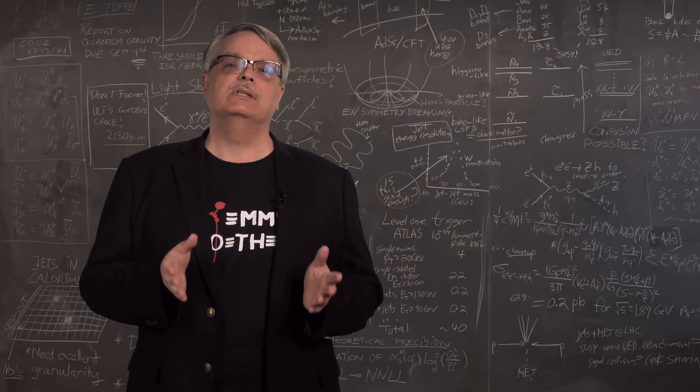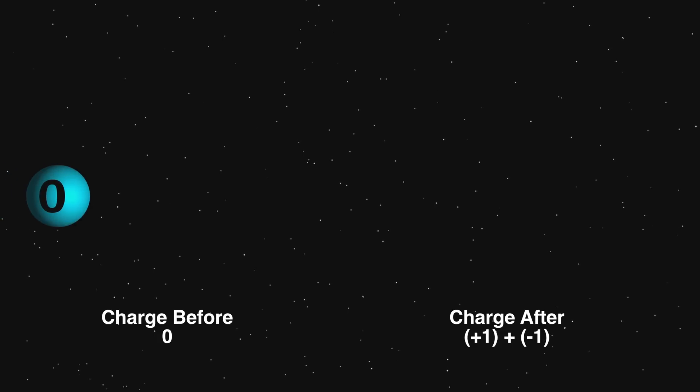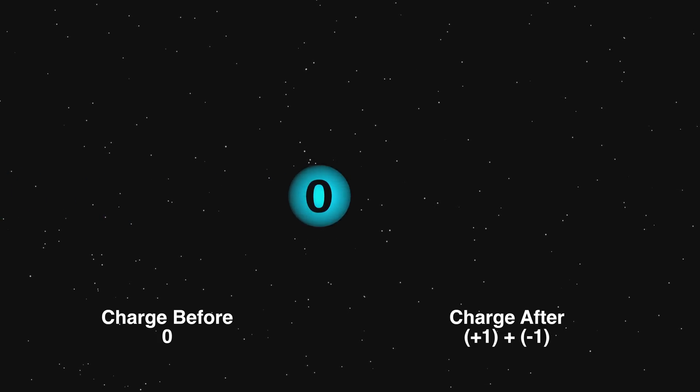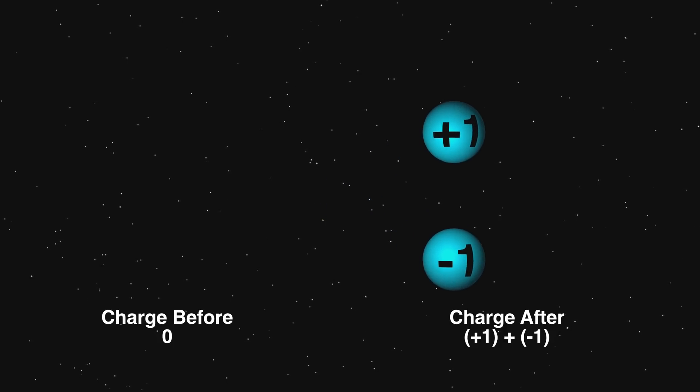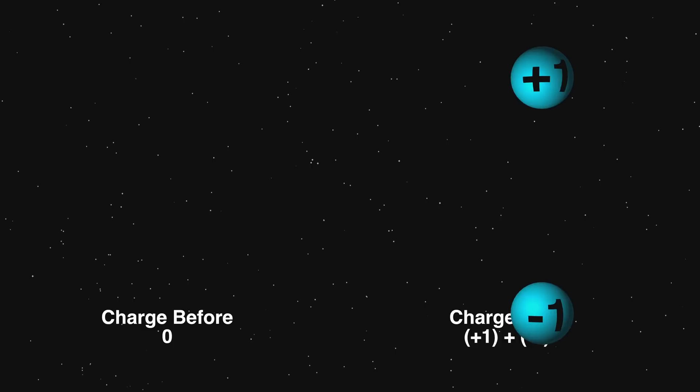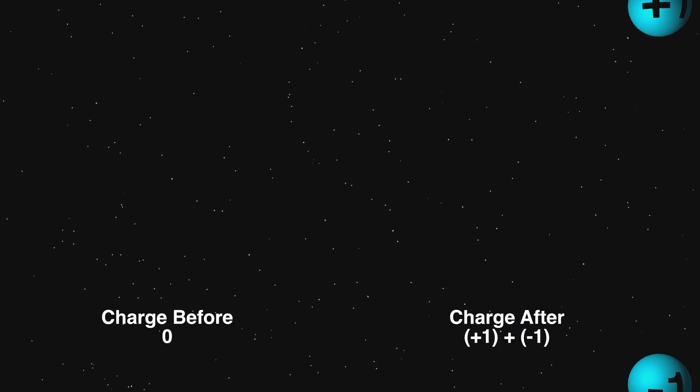Probably the simplest illustration of what I mean is conservation of charge. If you have a particle with zero charge, then it decays into a particle with a charge of plus one, it must also decay into a particle of minus one. Plus one added to minus one equals zero. That way, you have the same amount of charge before and after the decay.